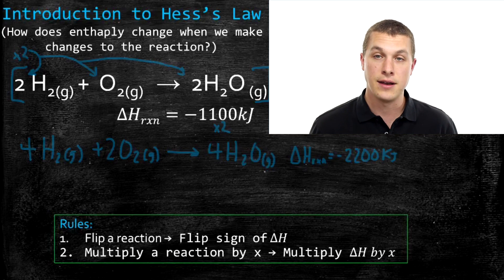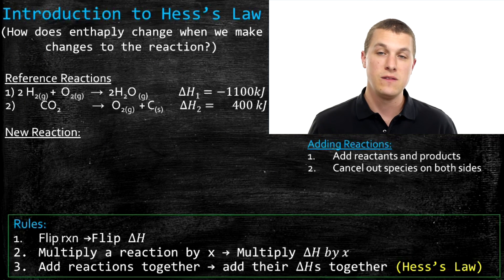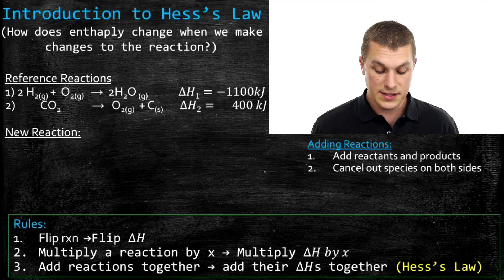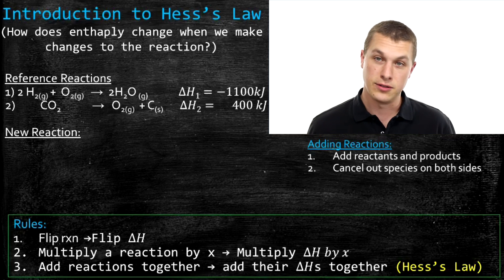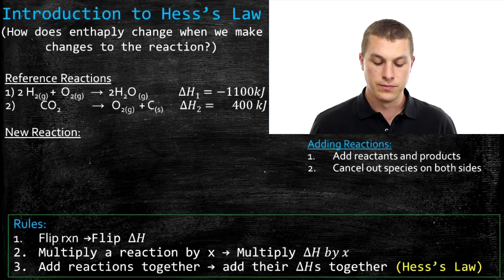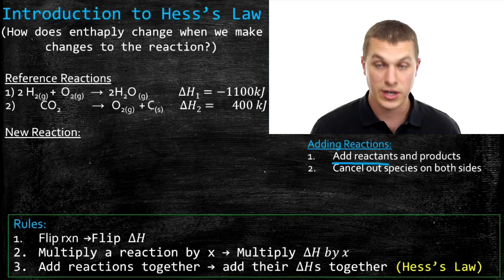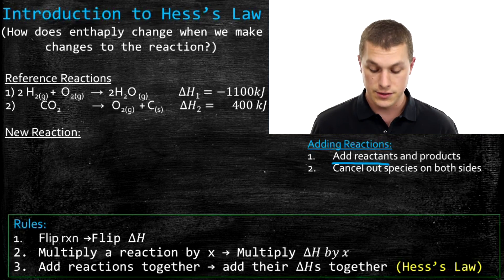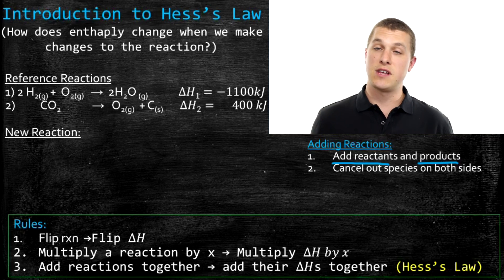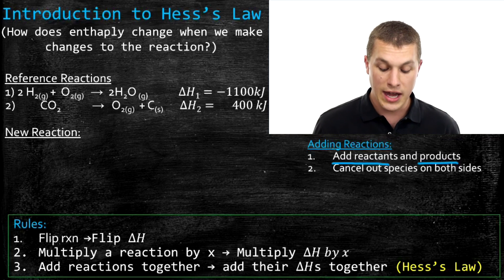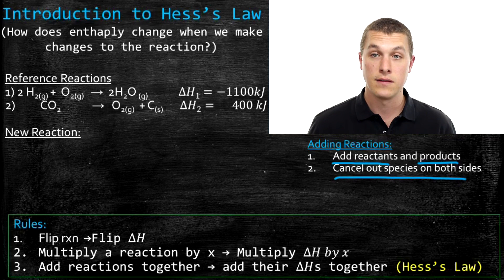The last rule allows us to add chemical reactions together. Technically, this is the only one that's called Hess's Law — the ability to add reactions together and add their delta H's. Adding a reaction is not totally straightforward. We add up the reactants from both reactions and add up the products from both reactions. If a species appears on both sides, we can drop it, because if something takes up oxygen and makes oxygen, there's been no real change.